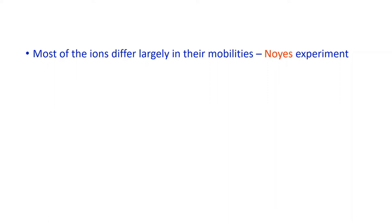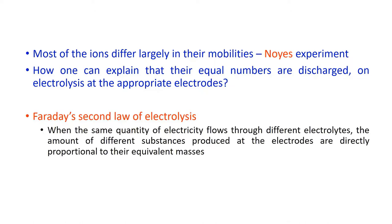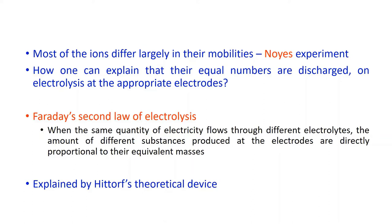We have discussed in the case of Hittorf's experiment that most of the ions differ largely in their mobilities. How can one explain that equal numbers are discharged on electrolysis at the appropriate electrodes? Faraday's second law of electrolysis states that when the same quantity of electricity flows through different electrolytes, the amount of different substances produced at the electrodes are directly proportional to their equivalent masses. This can be explained with the help of the theoretical device given by Hittorf.